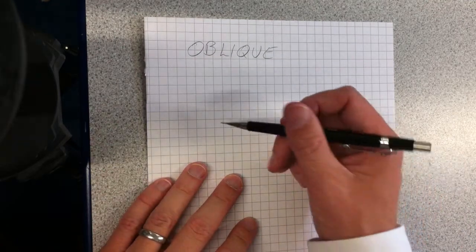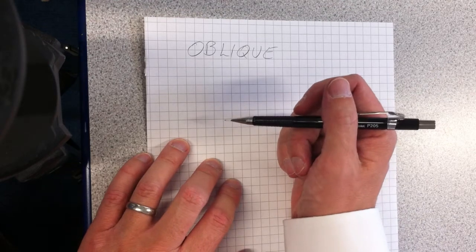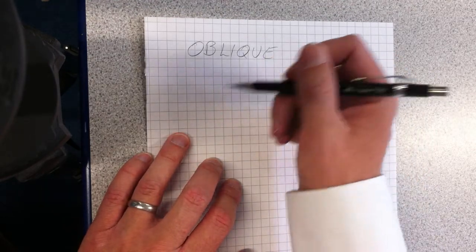The first type of drawing I'm going to look at is oblique drawing. This is the most simple and straightforward way of drawing and sketching in 3D. It requires you to use a 45-degree line to create the depth of your object.